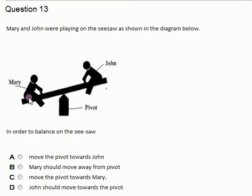Therefore, either Mary comes closer to the pivot, in other words reducing the distance between where Mary will be seated and the pivot, or you take the pivot and you push it towards where Mary is with an intention of reducing the distance between the pivot and Mary, hence increasing the distance between where John will be and the pivot.